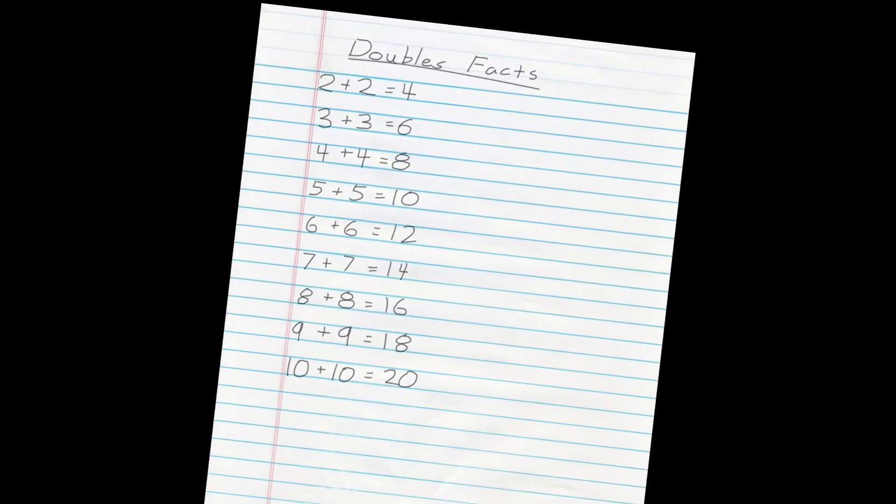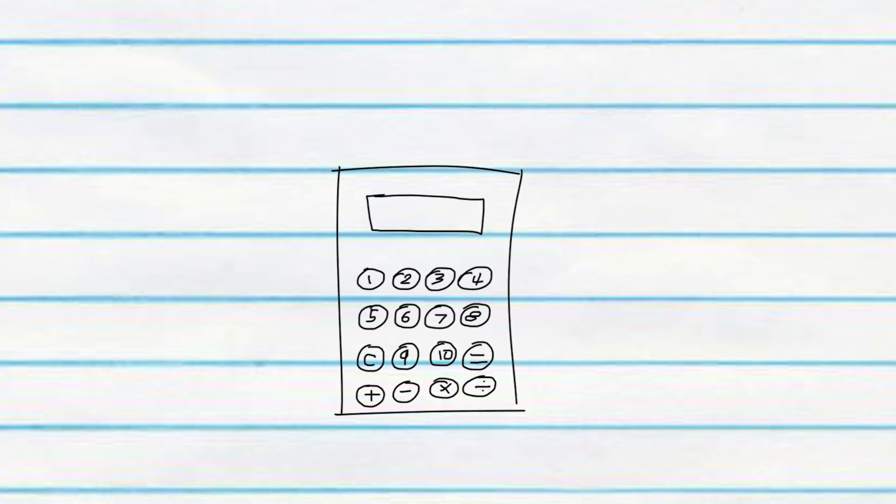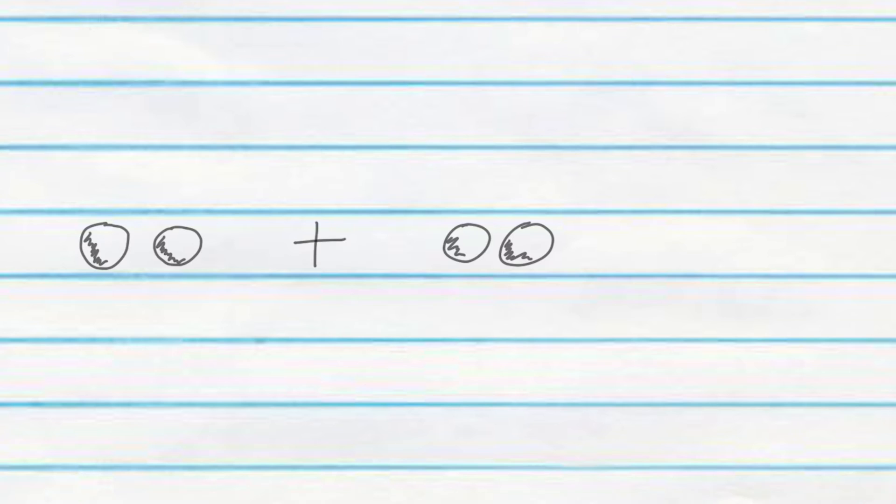You don't have to use your fingers, hesitate or linger. Doubles help you calculate at an ever faster rate. 2 plus 2 is 4. 2 plus 3 is one more. 2 plus 3 is 5.